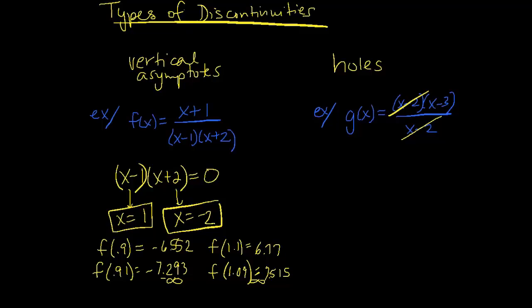So I'm left with g of x equals x minus 3. Look at that. The denominator completely disappeared. So now you're thinking, oh, no discontinuities. But there actually is a discontinuity.